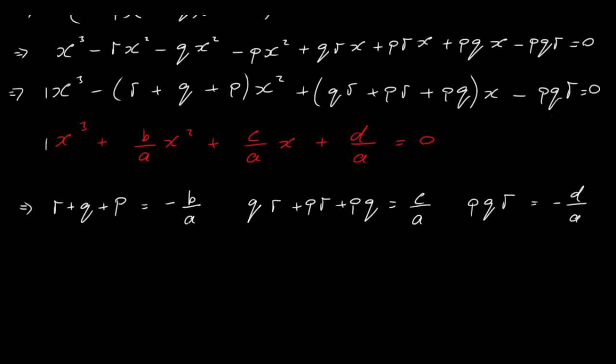So the sum of the three roots gives the coefficient of x squared with the sign changed. Multiplying roots in pairs and adding gives the coefficient of x. Multiplying all three roots gives the negative of the constant term over a, with the sign changed. These are our three Vieta's equations for cubics.